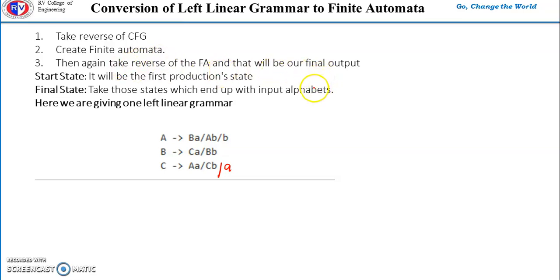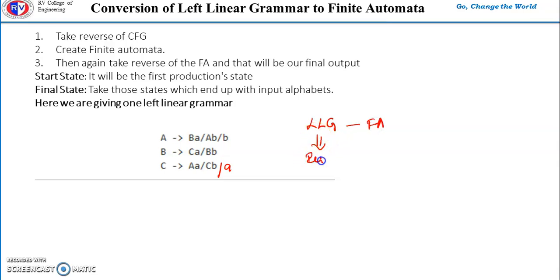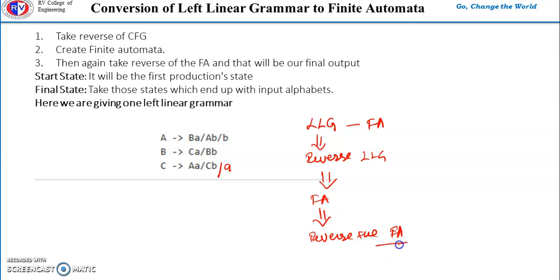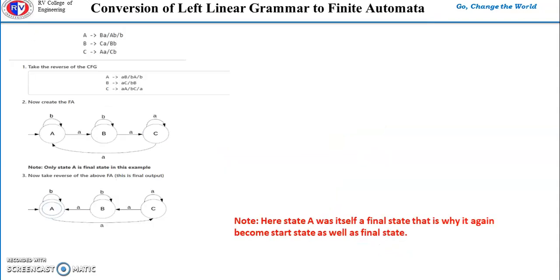So first, whatever left linear grammar is given to you, you reverse it, then create the finite automata, and then again take the reverse of the finite automata — and that will be the final answer. Here is an example of a left linear grammar. It is left linear because on the right hand side we have a single non-terminal and that non-terminal is the leftmost symbol.